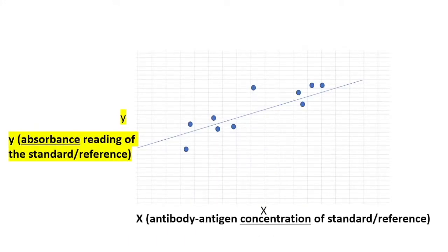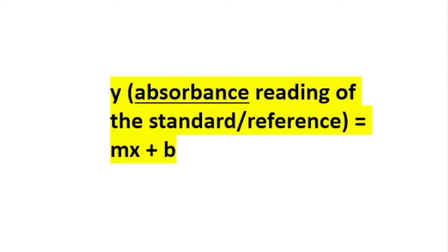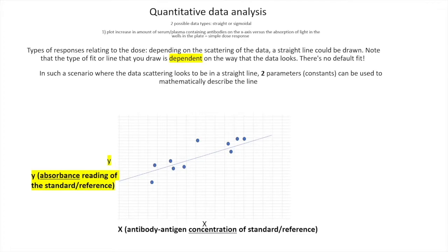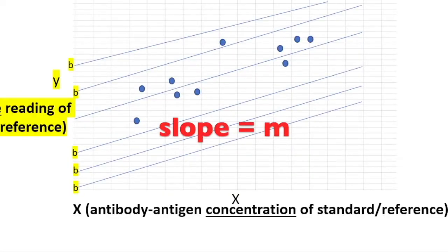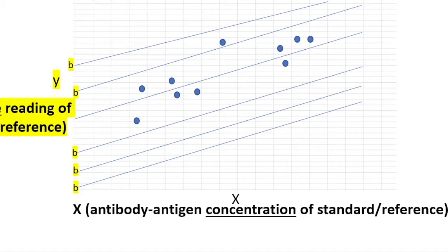In y = mx + b, the response (y) depends on m times x plus b, where m is the slope — the angle of the line — times your concentration (x), plus b, your y-intercept. The y-intercept (b) is simply where the line crosses the y-axis, which represents your response.